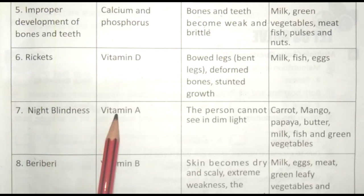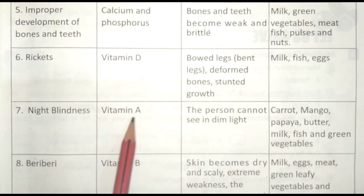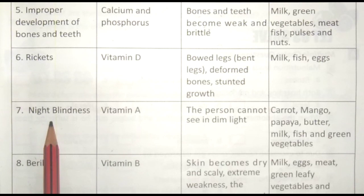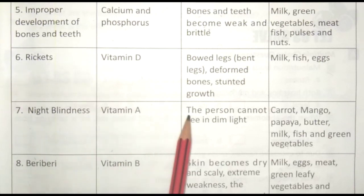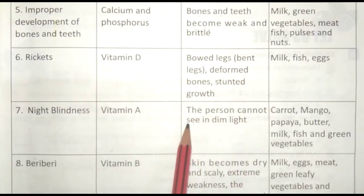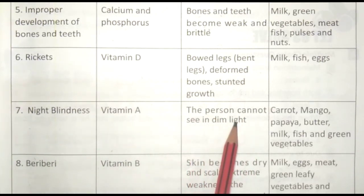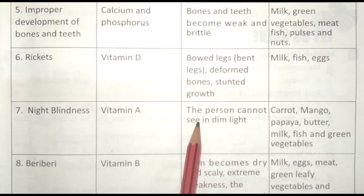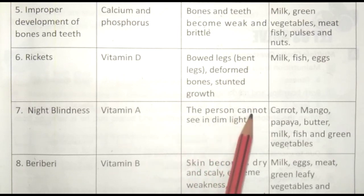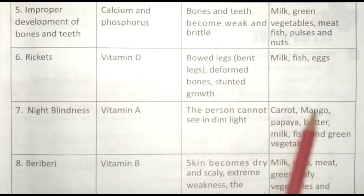Night Blindness — Ratodhi. This disease is caused by deficiency of Vitamin A — Vitamin A ki kami se ye bimari hoti hai. The person cannot see in dim light — Vyakti kum roshni mein dekh nahi sakta.